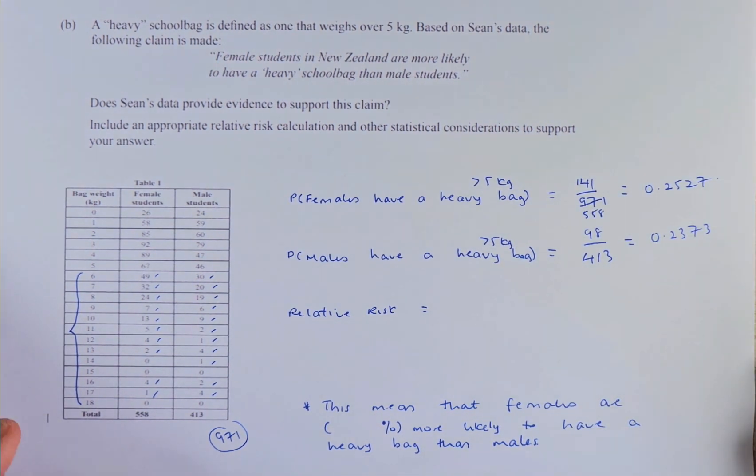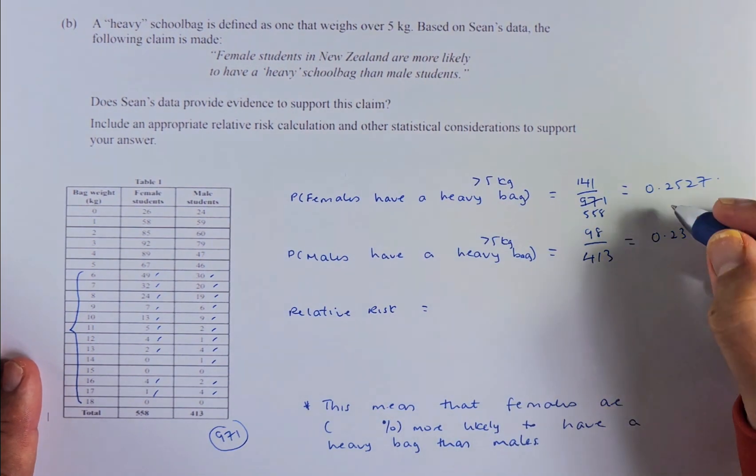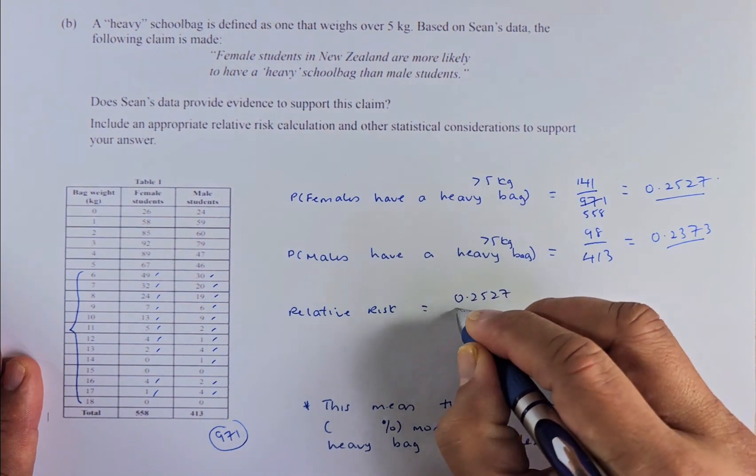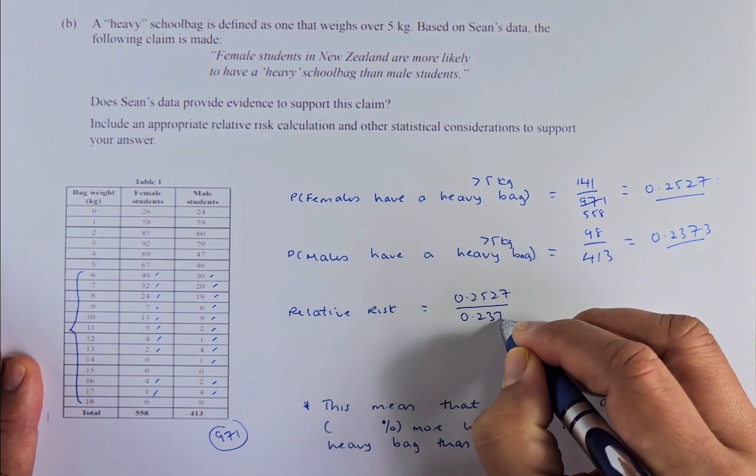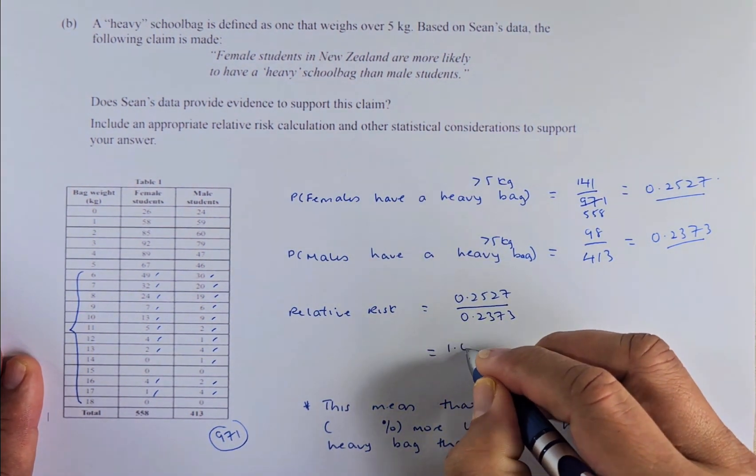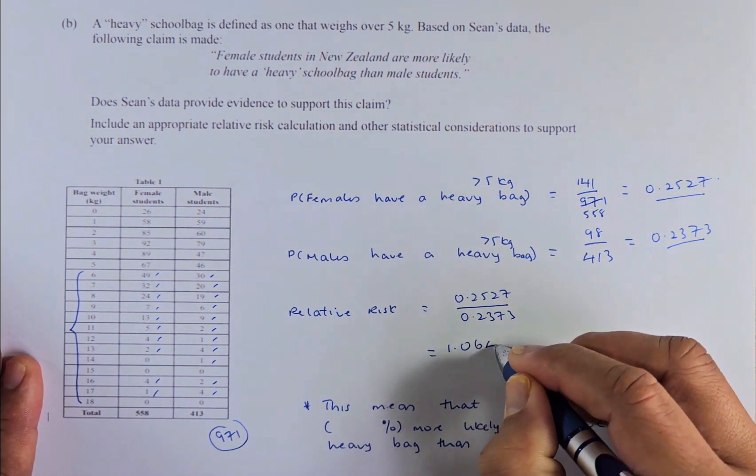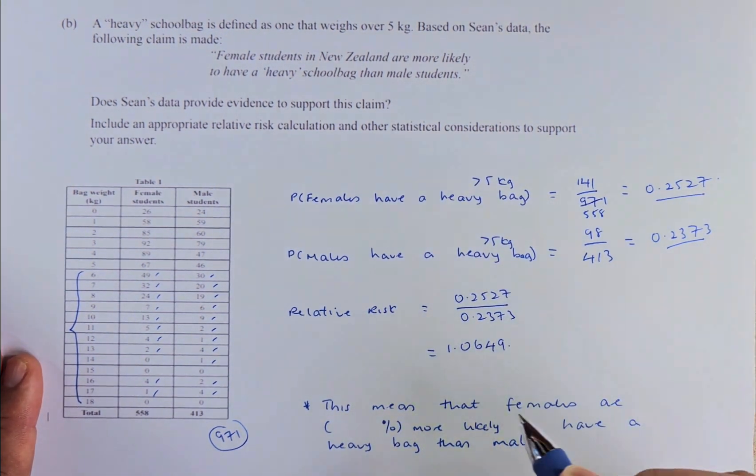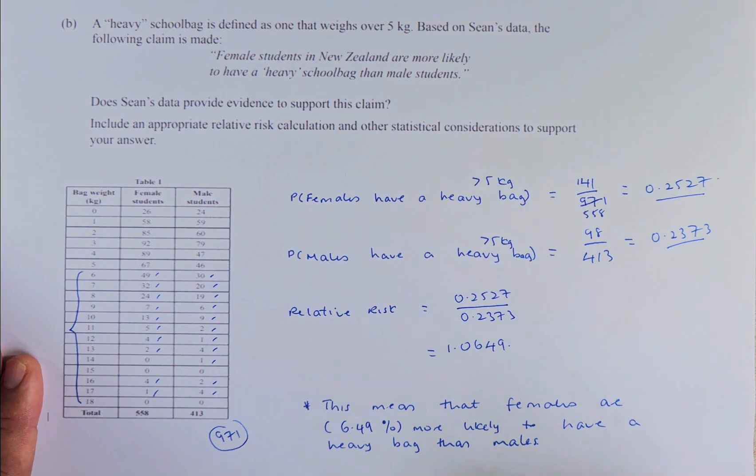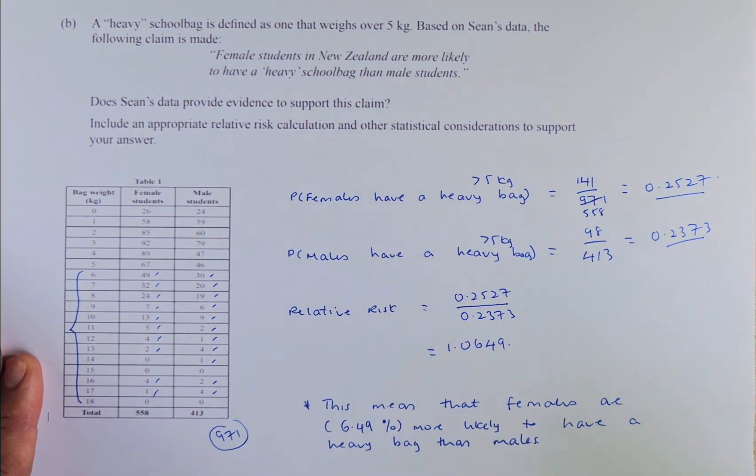So now the job is to calculate the relative risk for female over male. So you take this number divided by that number. So it's going to be 0.2527 divided by 0.2373. And you put in your calculator and the answer is going to be 1.0649. That's the answer. So female is 6.49% more likely to have a heavier bag than male. That is the 1.0649 means it's 6.49% more heavier than the male.